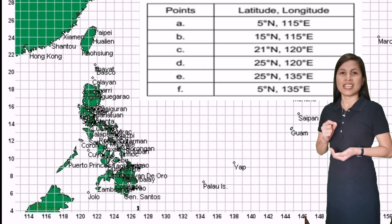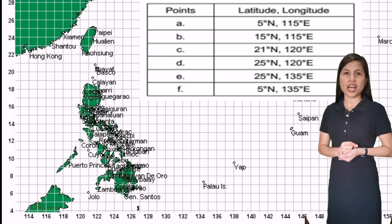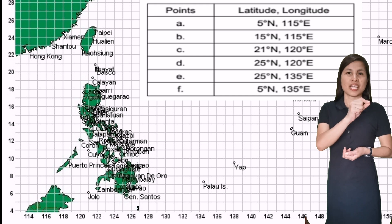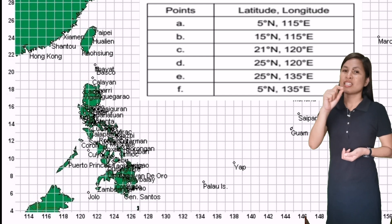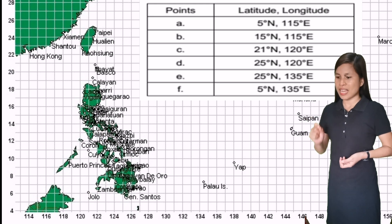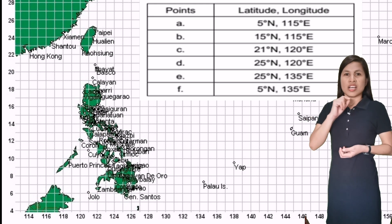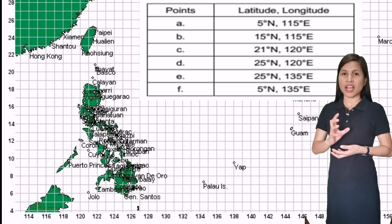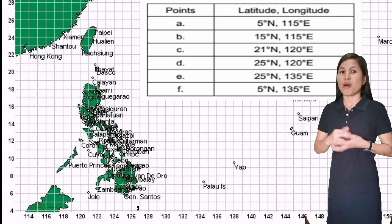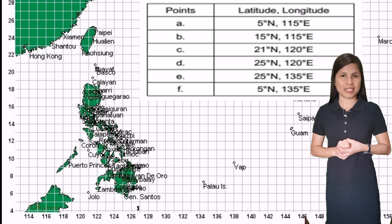After plotting points A, B, C, D, E, and F, connect the points from A to B, B to C, C to D, D to E, E to F, and F to A. The area within those points will be the Philippine Area of Responsibility.